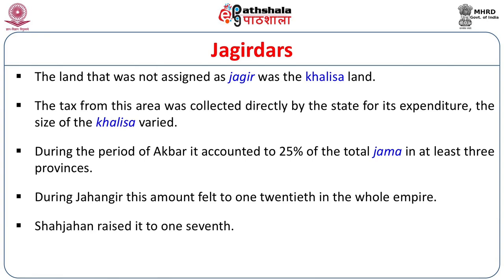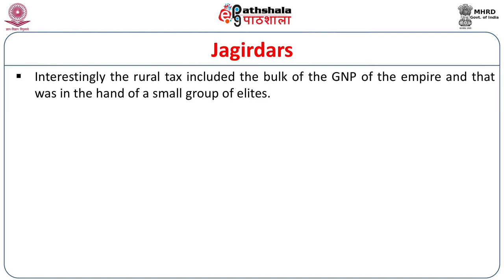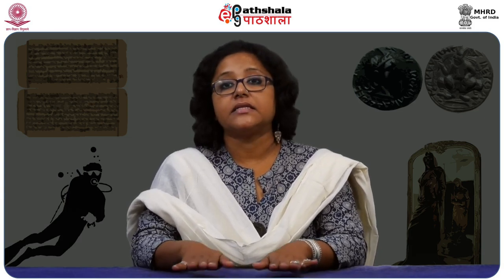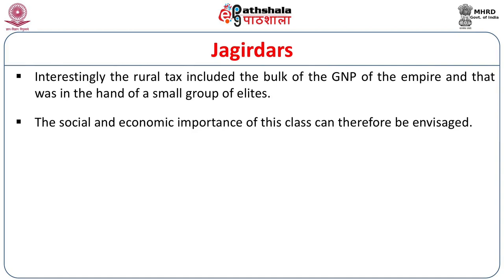It depended on how and when the center would convert lands into Khalisa land. Interestingly, the rural tax included the bulk of the GNP of the empire, and that was in the hands of a small group of elites. The producers were the lower rung of the peasantry, and the extractors were definitely one small group. The social and economic importance of this class can therefore be envisaged.